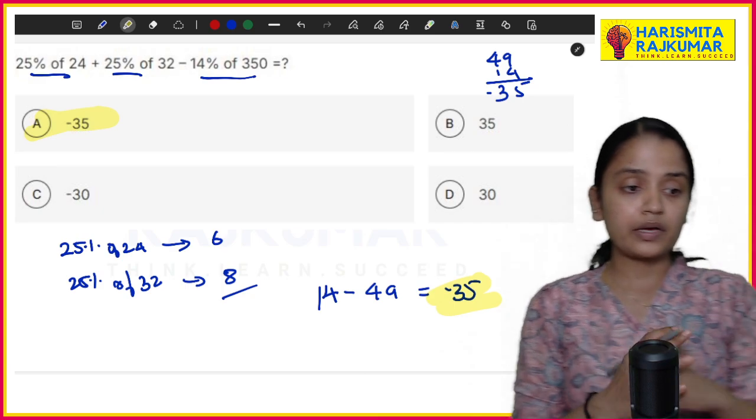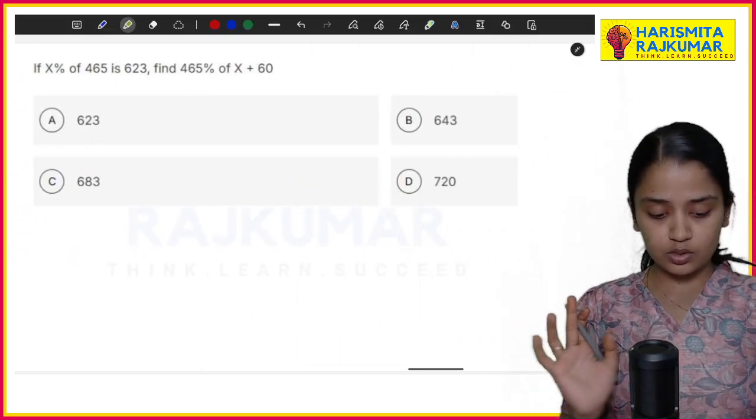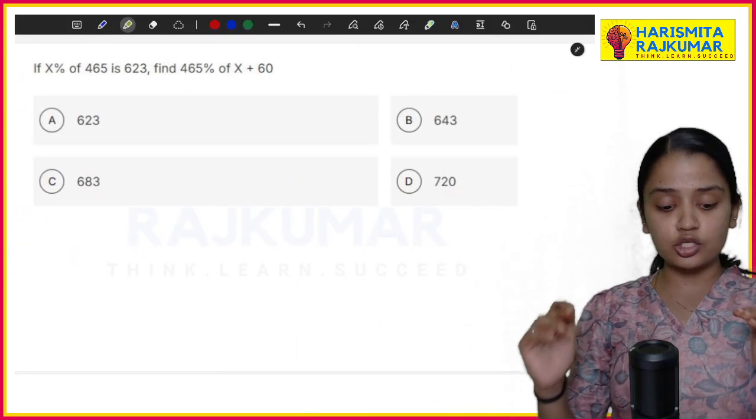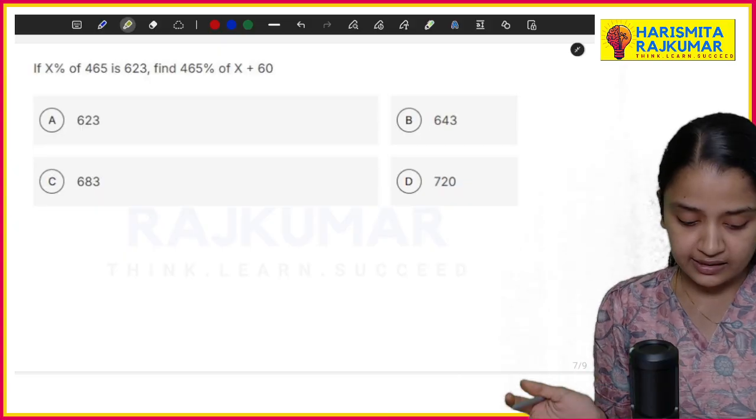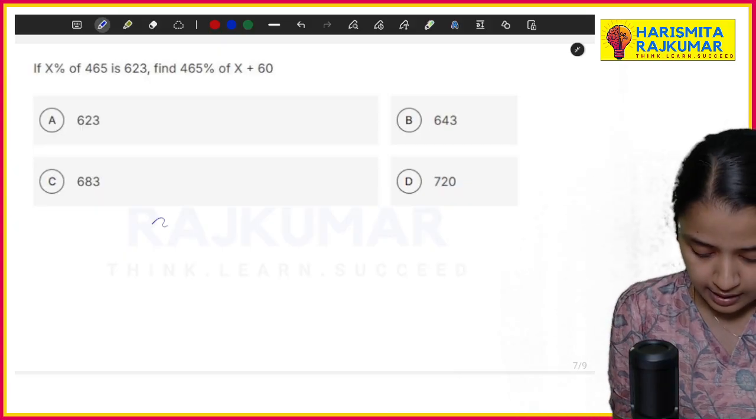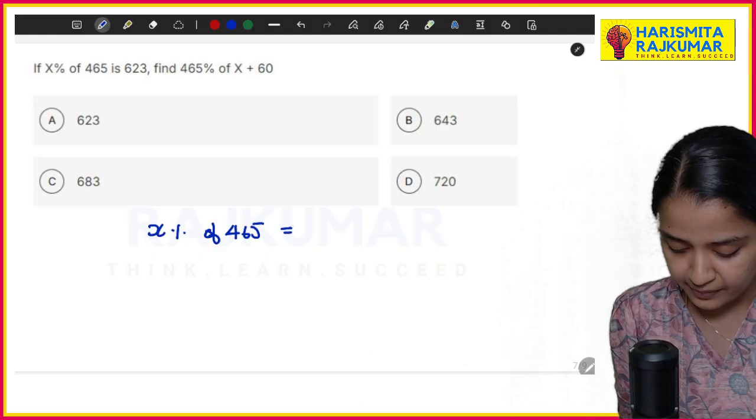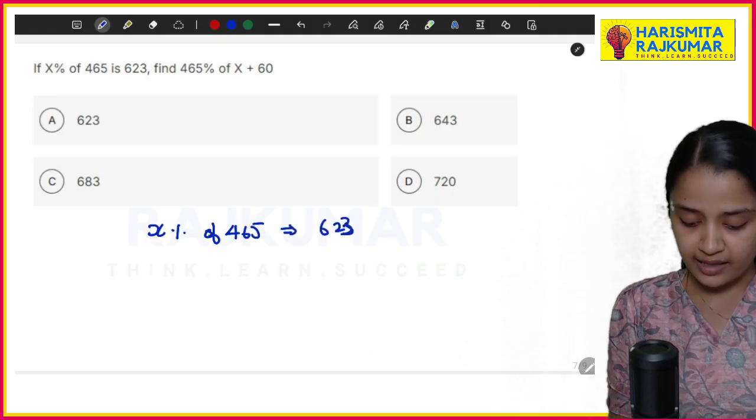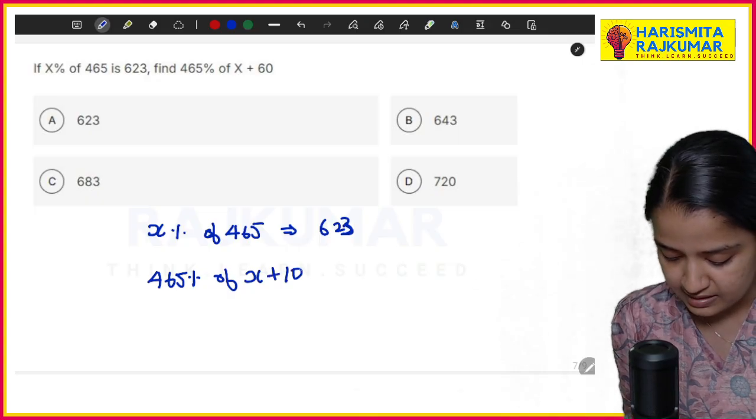Now let's go to the next one. The next sum is: x% of 465 is 623. So x% of 465, I'm getting my answer as 623. What are they asking? 465% of x + 60, that is the question.